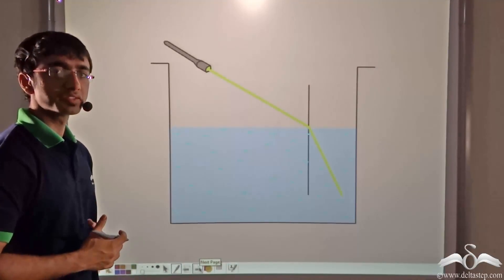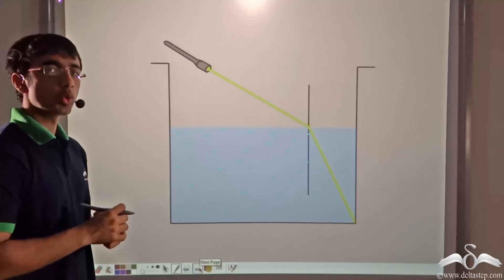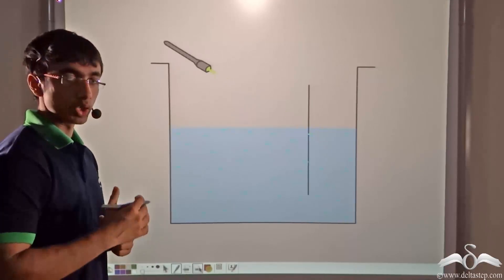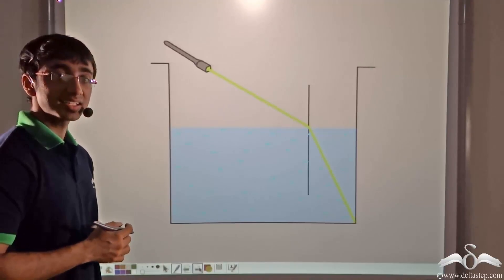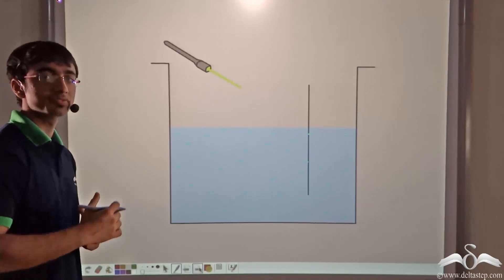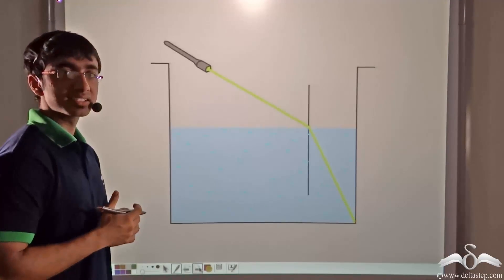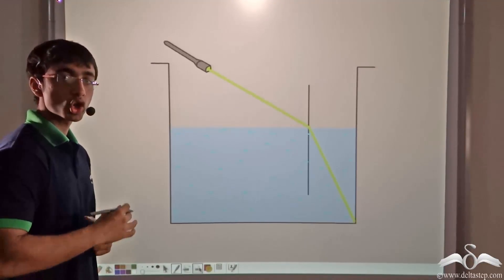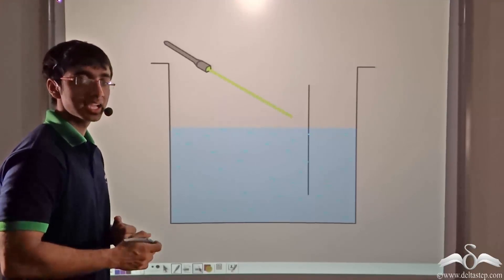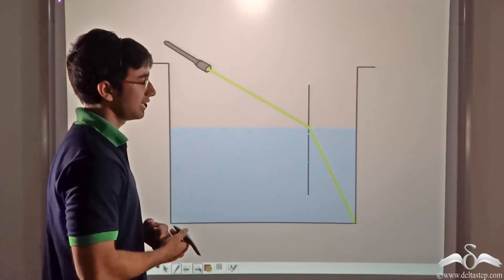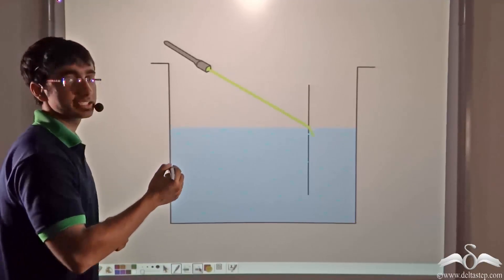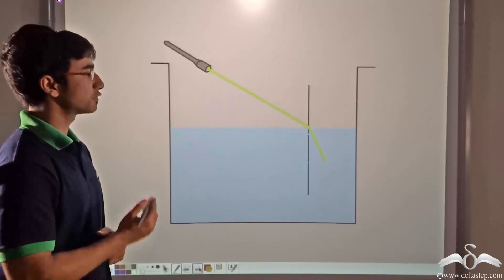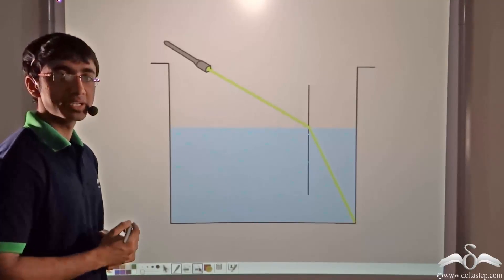You can try an experiment of refraction at home. Take a glass of water and a torch. Fill the glass with water and shine the torch from above such that the light beam is incident at the bottom of the glass. Take this entire setup to a dark room. You will notice that when you shine the torch on the water surface, the path of light is bending after it hits the air-water interface — the path of light is bending towards the normal because light is incident from air to water, that is from a rarer medium to a denser medium.